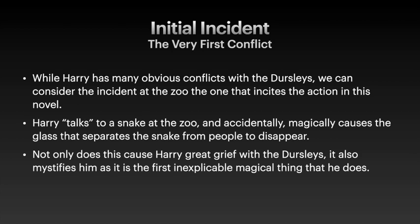The initial incident of any story is the very first conflict that occurs in the plot. This was kind of hard to determine with Harry Potter and the Sorcerer's Stone, because he does seem to have quite a few conflicts with his relatives, the Dursleys — they are not very nice to him at all, and he seems to be getting in trouble constantly. However, while Harry has many obvious conflicts with them, there is the incident that occurs at the zoo that incites the action in this novel. When they are at the zoo, Harry talks to a snake and accidentally magically causes the glass that separates the snake from people to disappear. Not only does this get him in trouble again with the Dursleys, but it's also a little bit confusing and scary to him, because he doesn't know how he made the glass disappear — he doesn't realize yet that he is a wizard, or that magic exists. So I have chosen this as our initial incident for this particular example.